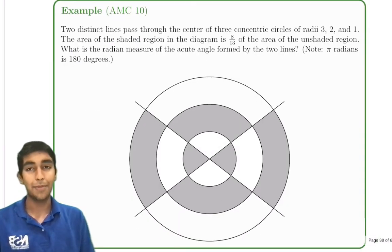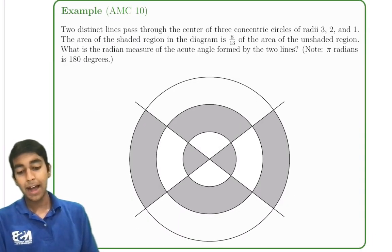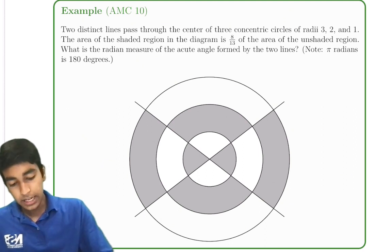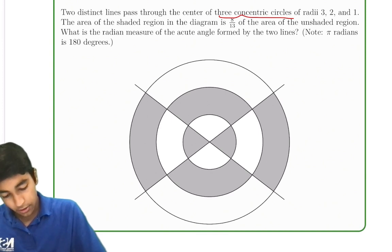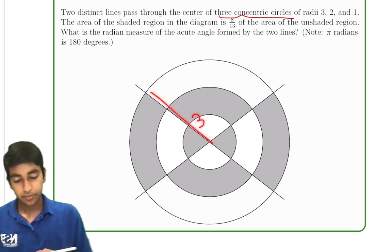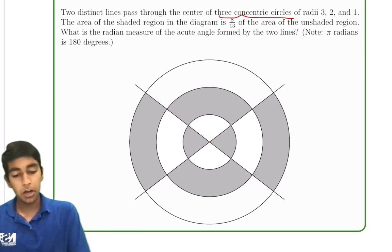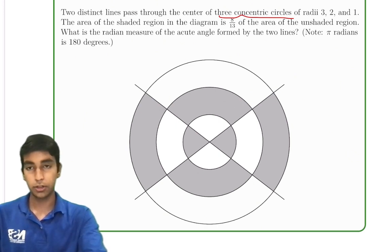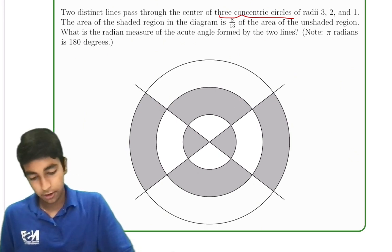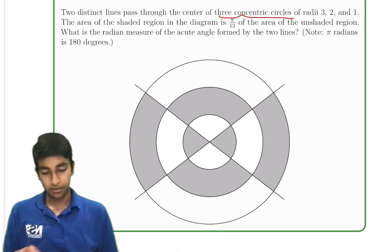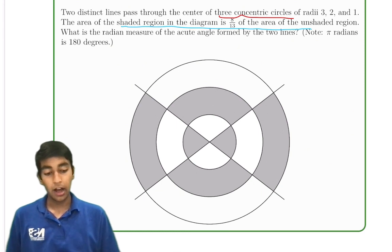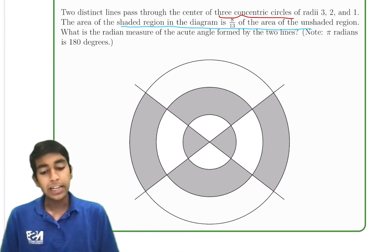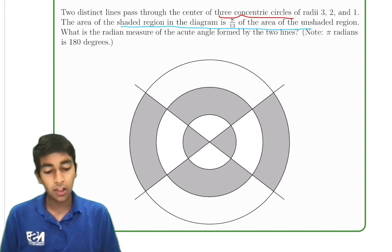Let's take this cool example from the AMC 10: two distinct lines passing through the center of three concentric circles of radii 3, 2, and 1. So the small circle has radius 1, the medium radius 2, and the big one 3. The area of the shaded region is 8/13ths the area of the unshaded region. What's the radian measure of the acute angle formed by the two lines?